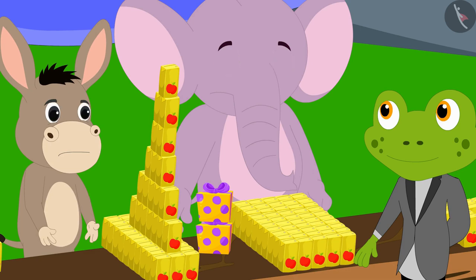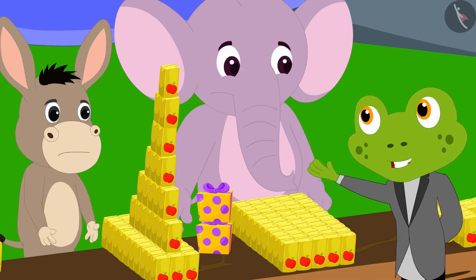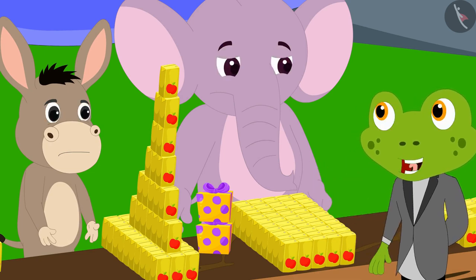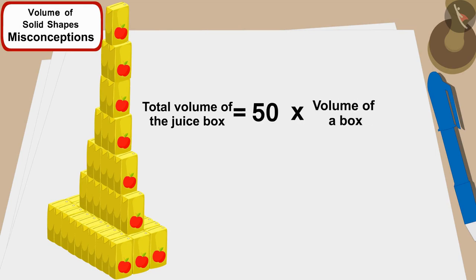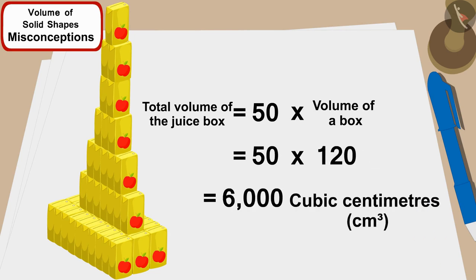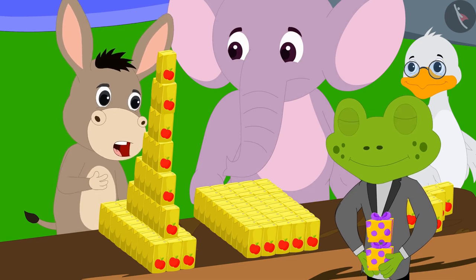Taru then asked Bola: 'How many boxes have you used in your shape?' Bola said: 'I have used 50 boxes too.' Taru asked Appu: 'Can you now tell us the total volume of juice used in the shape made by Bola?' Appu answered: '50 cartons have also been used in Bola's shape, so the total volume will also be 120 multiplied by 50, that is 6,000 cubic centimeters.'